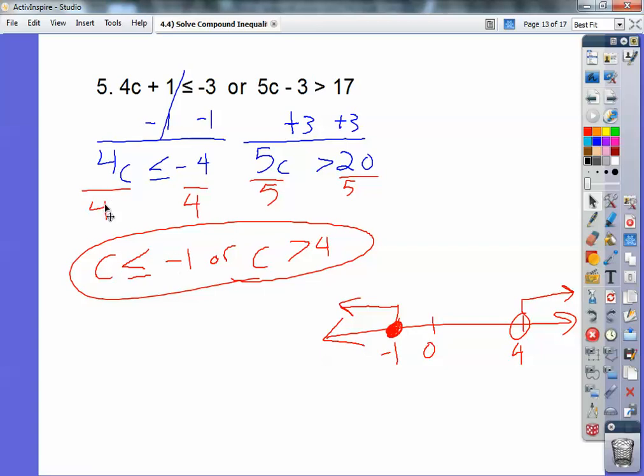Remember, I divide it by a positive four, so it doesn't flip the inequality. It only flips when it's negative. And over here, I divide it by five, and so closed on this one to the left, open on that one and through the right.